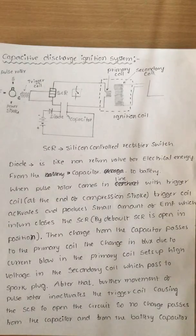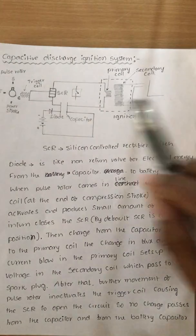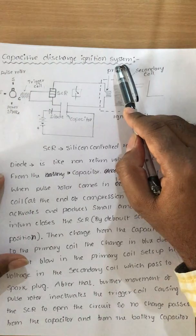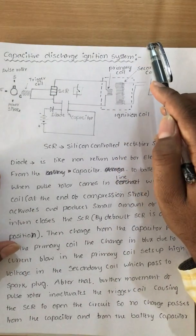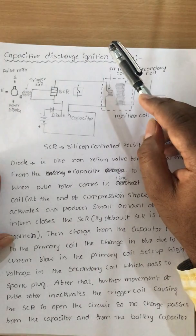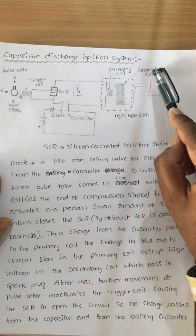Good morning, I welcome you all to the series of lectures on internal combustion engines. Today we are going to discuss the Capacitive Discharge Ignition System. In the last class we covered the battery ignition system, magneto ignition system, and the transistorized ignition system. In this class we are focusing on the Capacitive Discharge Ignition System.